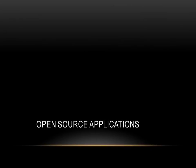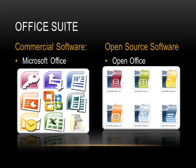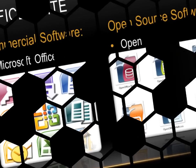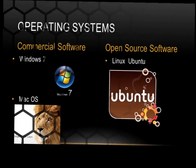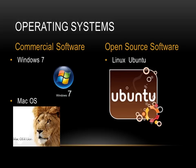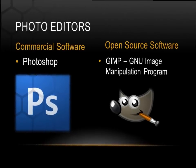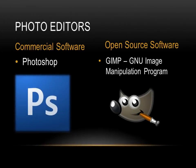Now let us look at some open source applications. OpenOffice is an open source office suite that can be used as an alternative to Microsoft Office. Ubuntu is an open source operating system that can be used as an alternative to Windows and Mac operating systems. An open source alternative to Photoshop is GIMP, the GNU Image Manipulation Program.